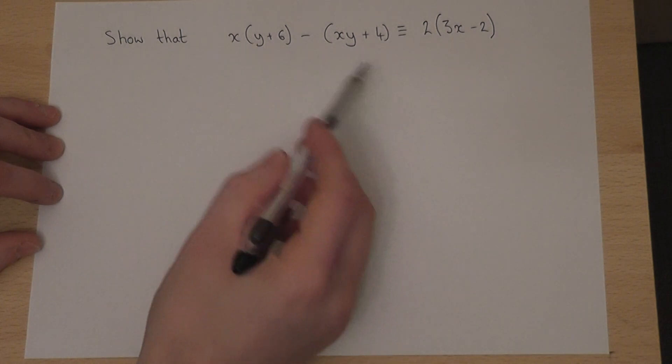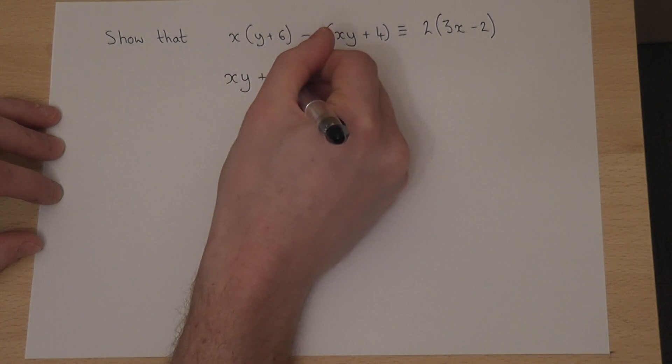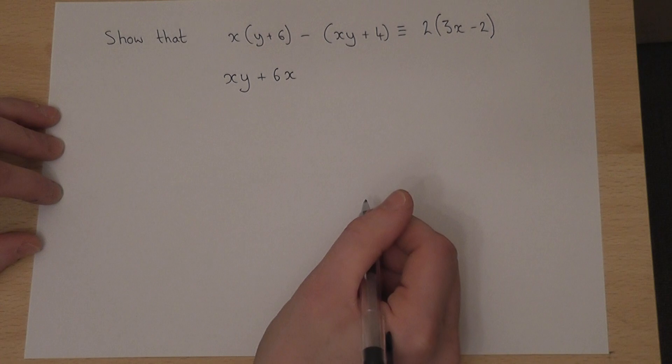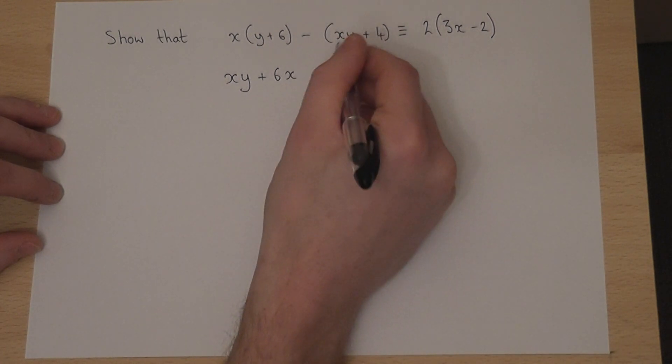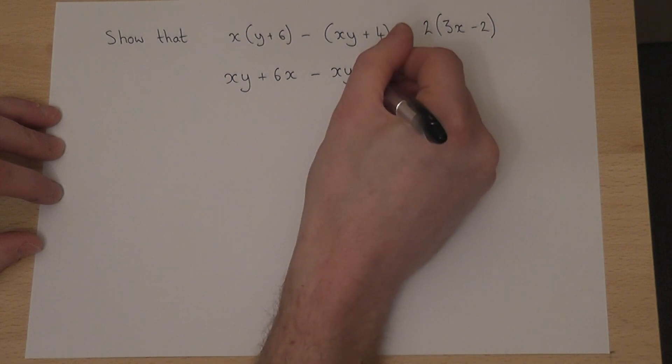Now, to expand this, we times the first bracket by x. So we get xy plus 6 times x. And I must take away an xy, but also take away a 4.